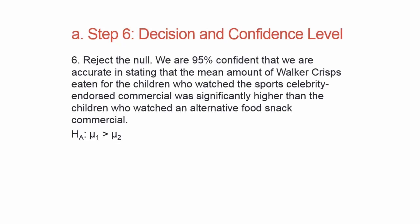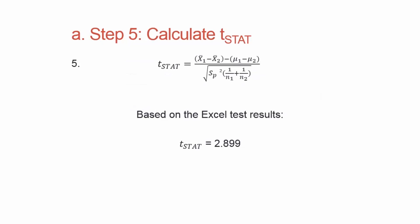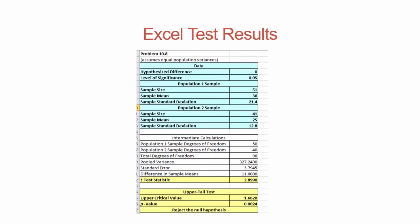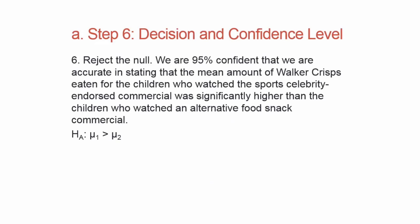Step six: I'm going to reject the null. Why? Because my t-stat is 2.899 and my critical value is 1.661. Because the t-statistic is greater than the upper critical value, I reject the null. I'm 95% confident in stating that the mean amount of Walker crisps eaten for children who watched the endorsed commercial was higher than for those who watched the alternative. The alternative hypothesis mu1 greater than mu2 is the true statement, and I'm willing to decide that celebrity endorsements cause children to eat more chips.